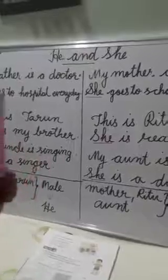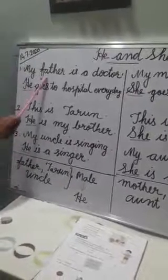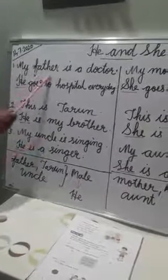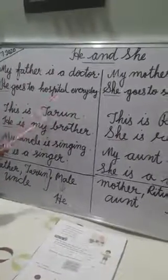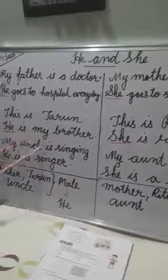So 'he' and 'she' are pronouns. Now where do we use 'he'? We use 'he' for Father, Tarun, and Uncle. Father is a man — a male person. Tarun is a boy — also a male person. Uncle is also a man — that is male.